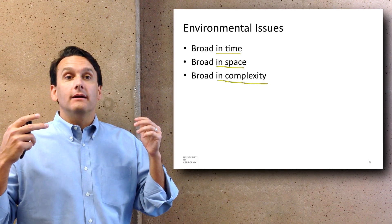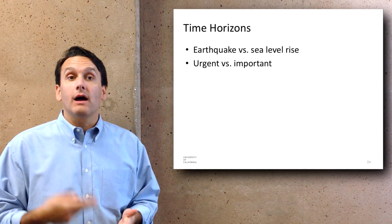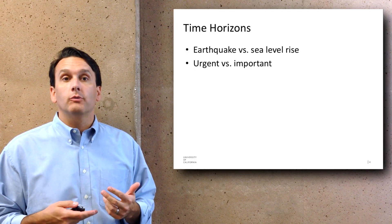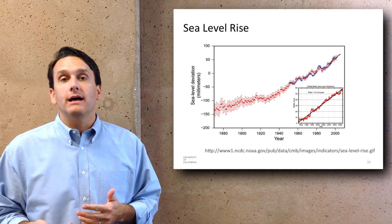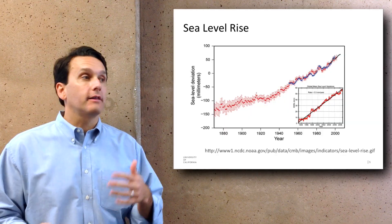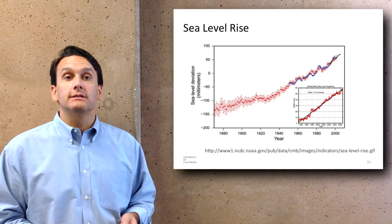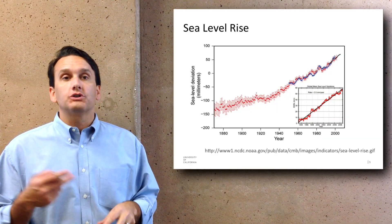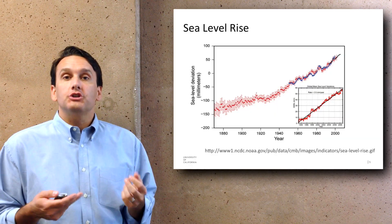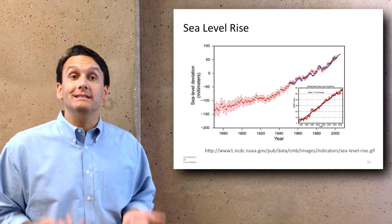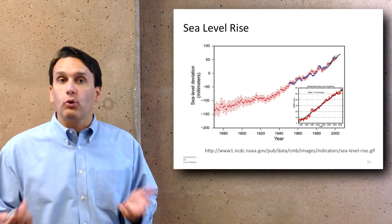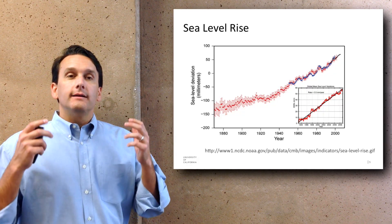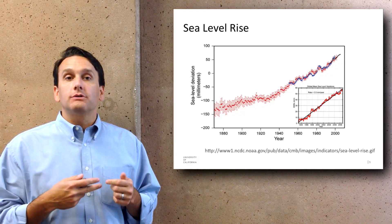The time horizons of these issues are different from the ones that humans are potentially more familiar with. There are things like sea level rise that take place over 50 or 100 years rather than an earthquake, which is pretty instantaneous. There's a distinction between being urgent versus being important, and a lot of the things humans are good at responding to are urgency, not necessarily importance. This is a distinction that I think is critical.